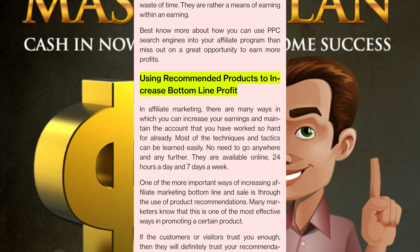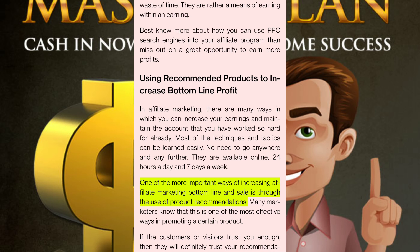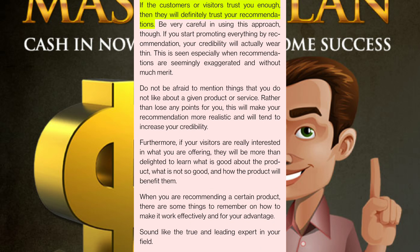Using recommended products to increase bottom line profit: in affiliate marketing, there are many ways to increase your earnings and maintain the account that you have worked so hard for. Most of the techniques can be learned easily online, 24 hours a day and seven days a week. One of the more important ways of increasing affiliate marketing bottom line and sales is through the use of product recommendations. Many marketers know this is one of the most effective ways of promoting a certain product. If the customers or visitors trust you enough, then they will definitely trust your recommendations. Be very careful in using this approach though — if you start promoting everything by recommendation, your credibility will actually wear thin.